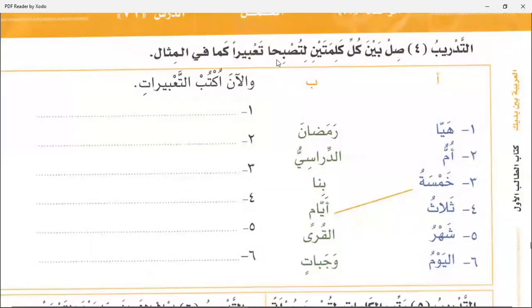Then join each pair of two words so that they become a phrase. You will write the phrase here. For example, in number three you will draw a line between them to join them, then write the phrase here. First join them, then write them.